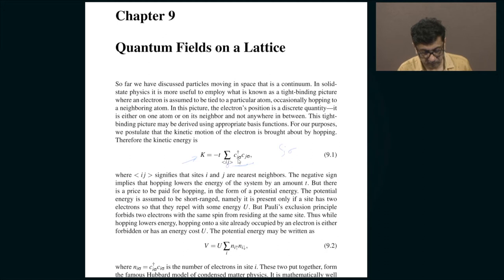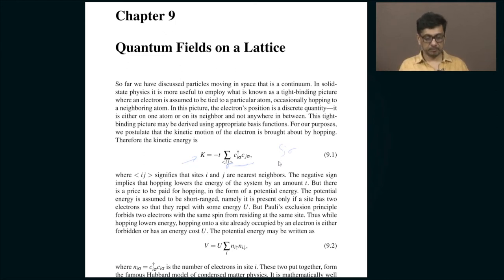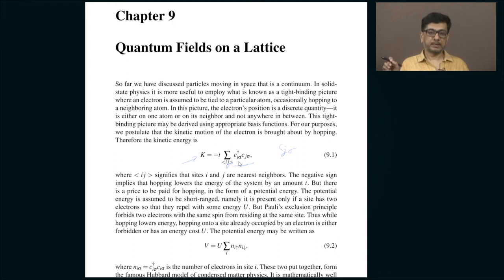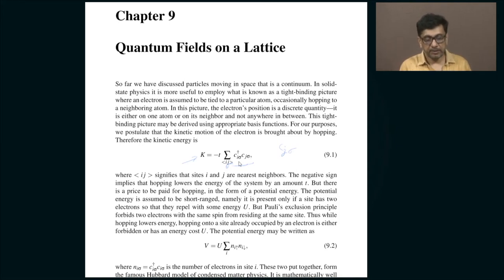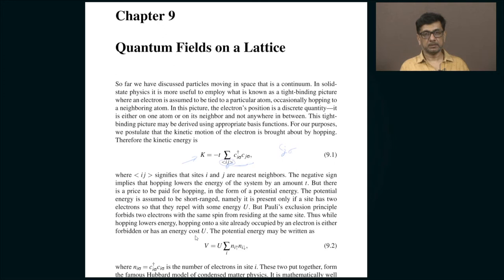Sigma is the spin projection — up or down — which is not the key index. The important index is j or i, which labels the lattice point. J can refer to some point in a lattice that can be one, two, or three dimensional. Similarly, i also refers to some other point on the same lattice. I sum over i and j, where i and j appear in angular brackets — meaning the summation is over nearest neighbor pairs.